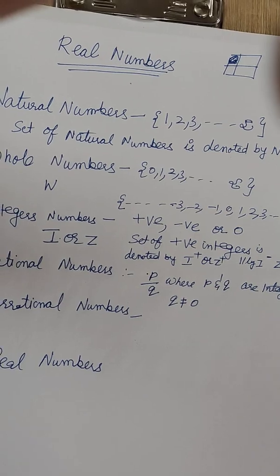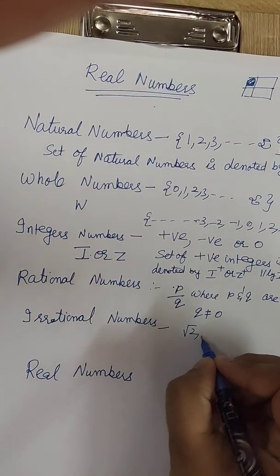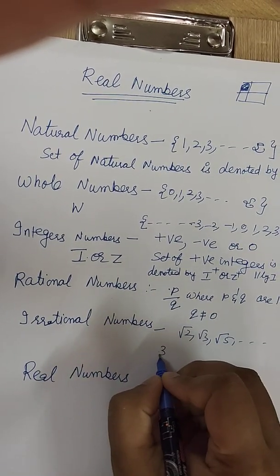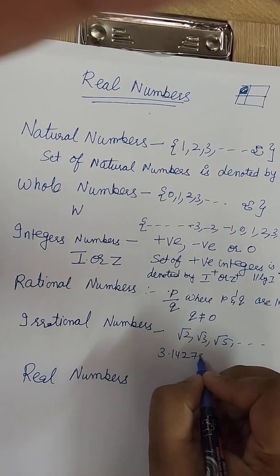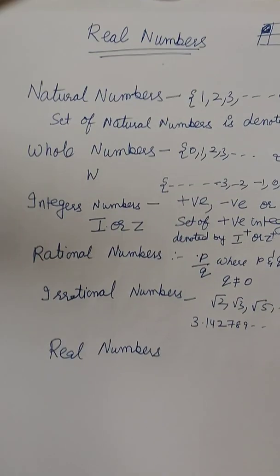So now what are irrational numbers? That cannot be represented in the form of P by Q. So under root 2, under root 3, under root 5 and so on. Like 3.142789 that never ends. These all are irrational numbers.